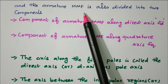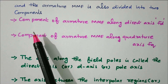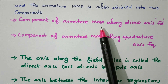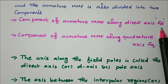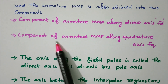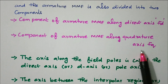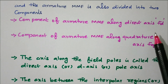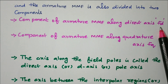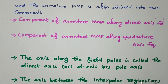The armature MMF is also divided into two components. The component of armature MMF along the direct axis is called Fd, and the component along the quadrature axis is Fq. So armature MMF is divided into Fd along the direct axis and Fq along the quadrature axis.